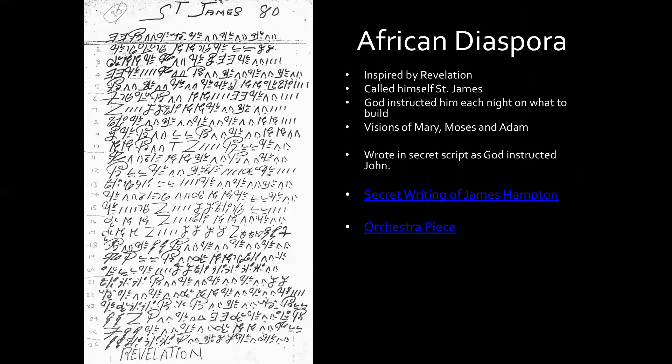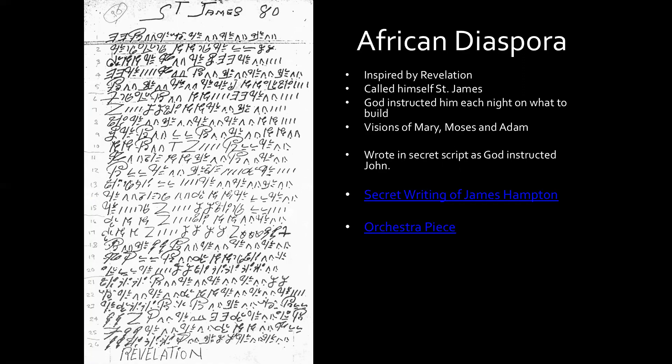Along with this, he created a language. There's a link I'll include that tries to analyze what was going on with his writing — the secret writing of James Hampton. He wrote in a secret script, as God instructed John, the believed writer of Revelation. The script hasn't been deciphered yet. Cryptologists and others who do this for a living have worked on it. For now, it is not understood what type of cryptography or system he used to write these verses.